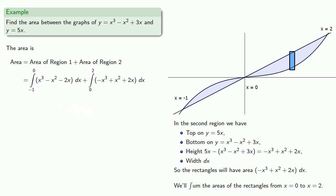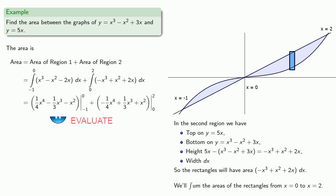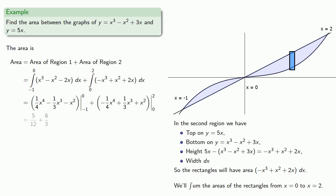We anti-differentiate, then evaluate, and sum the two results to find the total area.